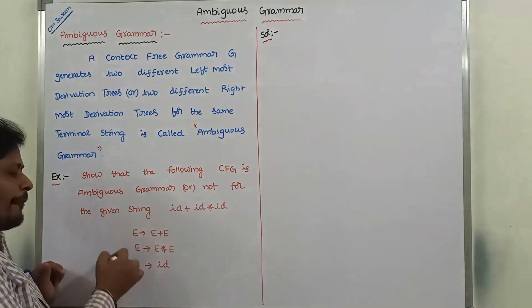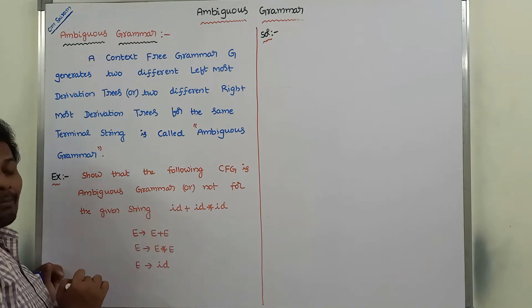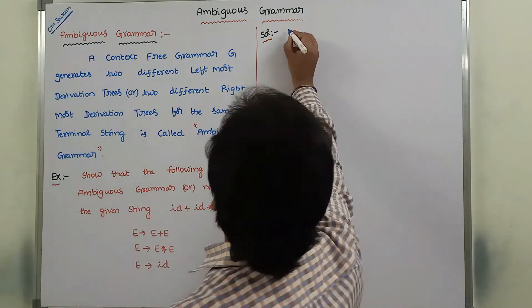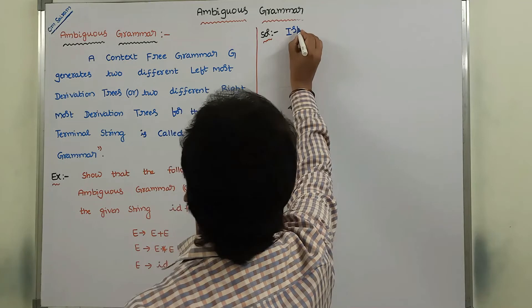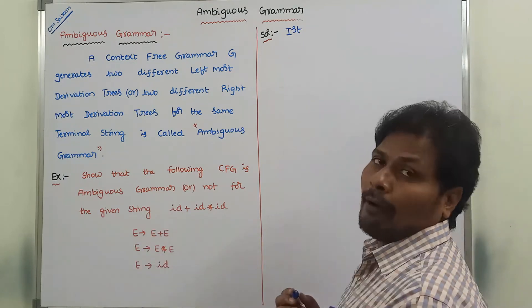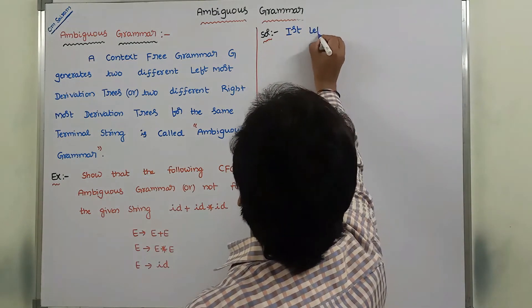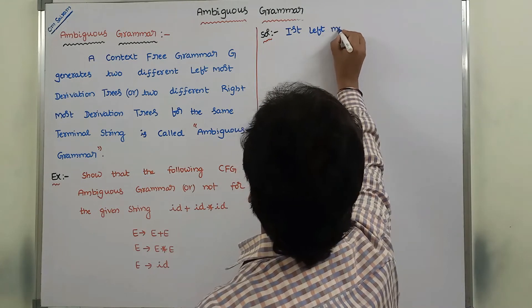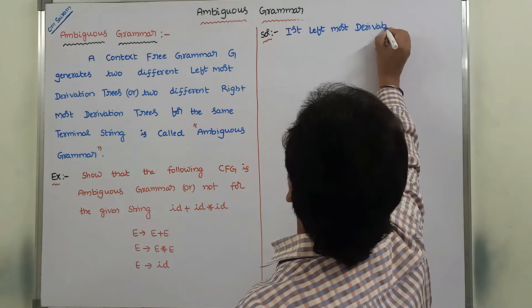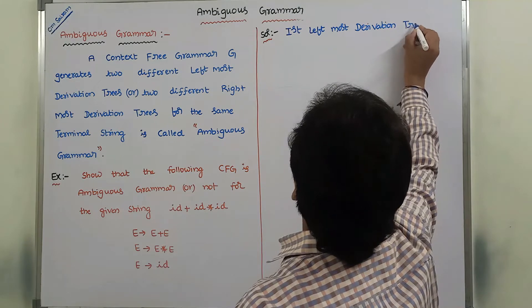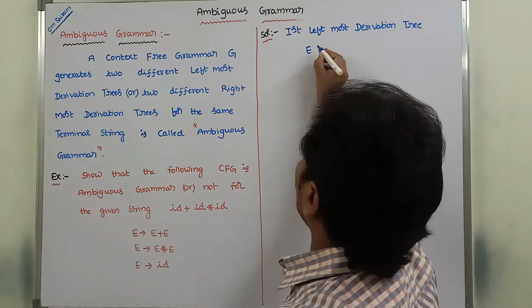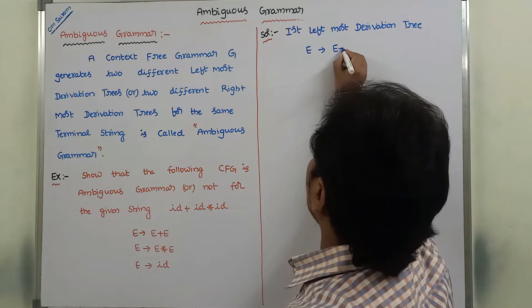Now, we have to verify whether this grammar is ambiguous grammar or not for generating this string. In this example, I am considering leftmost derivations — whether two leftmost derivation trees exist for this string by using this grammar or not. First leftmost derivation tree. Now, I am considering this production: E derives to E plus E.